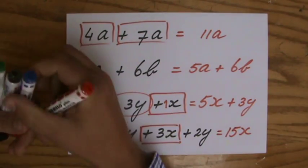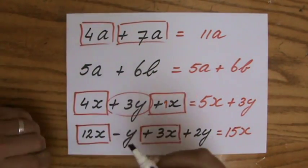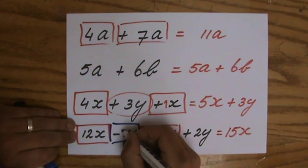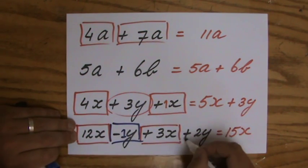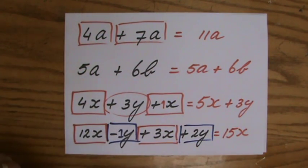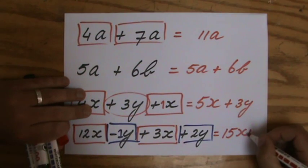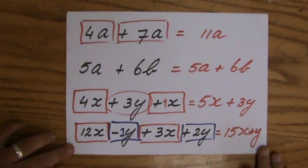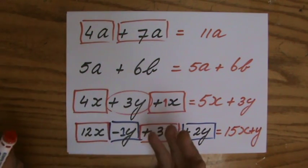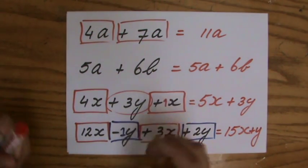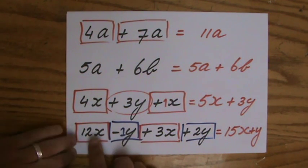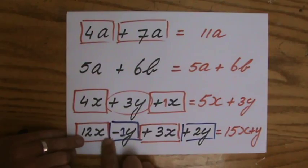Then we go to the Ys. I have a negative Y. So minus 1Y, if you like. You put the 1 there. Minus 1Y plus 2Y. And that is minus 1Y plus 2Y. That is 1Y. So Y, a positive Y, that is. So please make sure that you assign the sign to the term which is directly next to it. So it's 12X plus 3X, not 12X minus 3X.